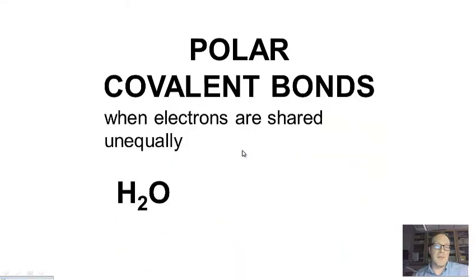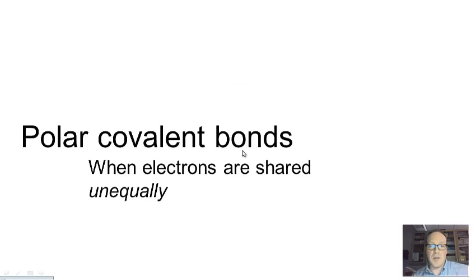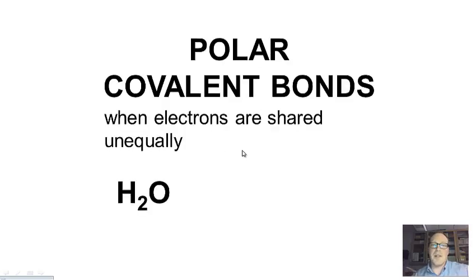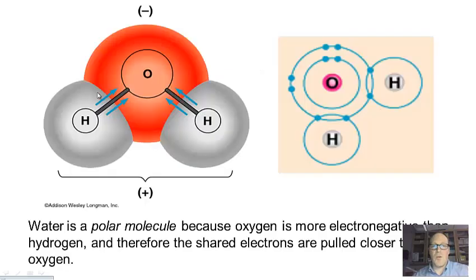I mentioned polar covalent bonds happen when electrons are shared unequally. A great example is in the water molecule. This is a water molecule, two hydrogens and one oxygen. What happens is the electrons tend to hang out a little more often around the oxygen than around the hydrogen. So this side of the water molecule becomes slightly negative, and this side resultantly becomes positive.